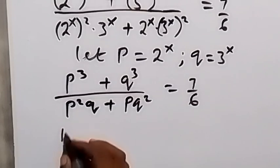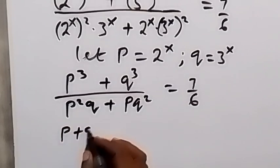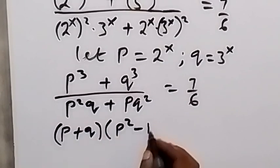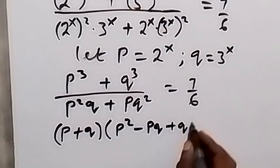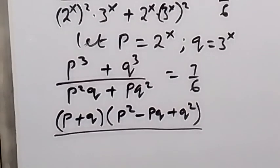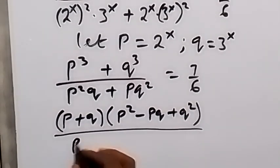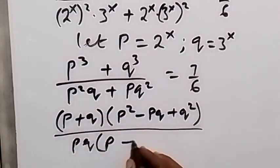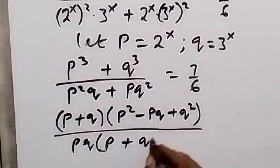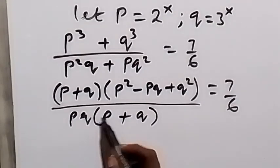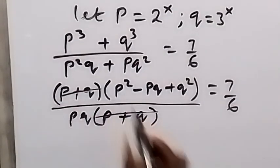We apply the sum of two cubes formula: t cubed plus q cubed becomes t plus q, multiplied by t squared minus tq plus q squared, in the numerator. In the denominator, we factor out tq, leaving tq times the bracket t plus q. This equals 7 over 6.